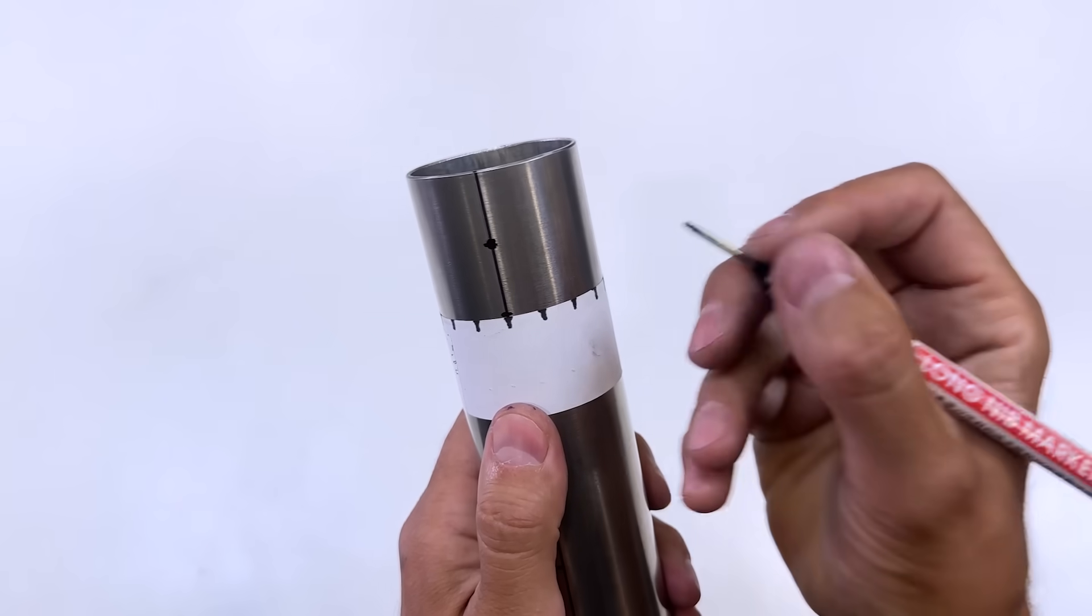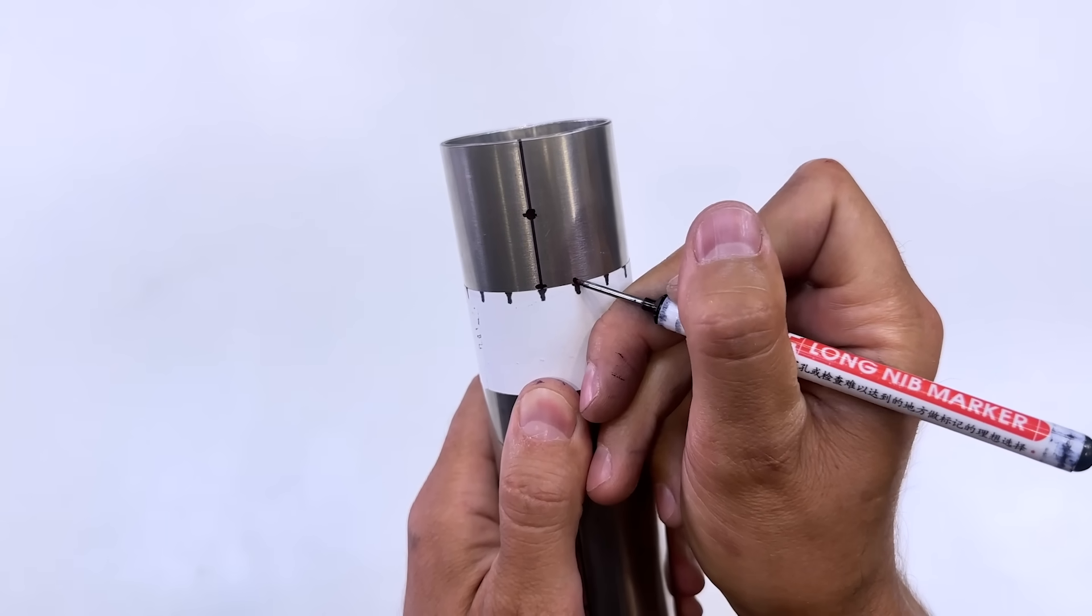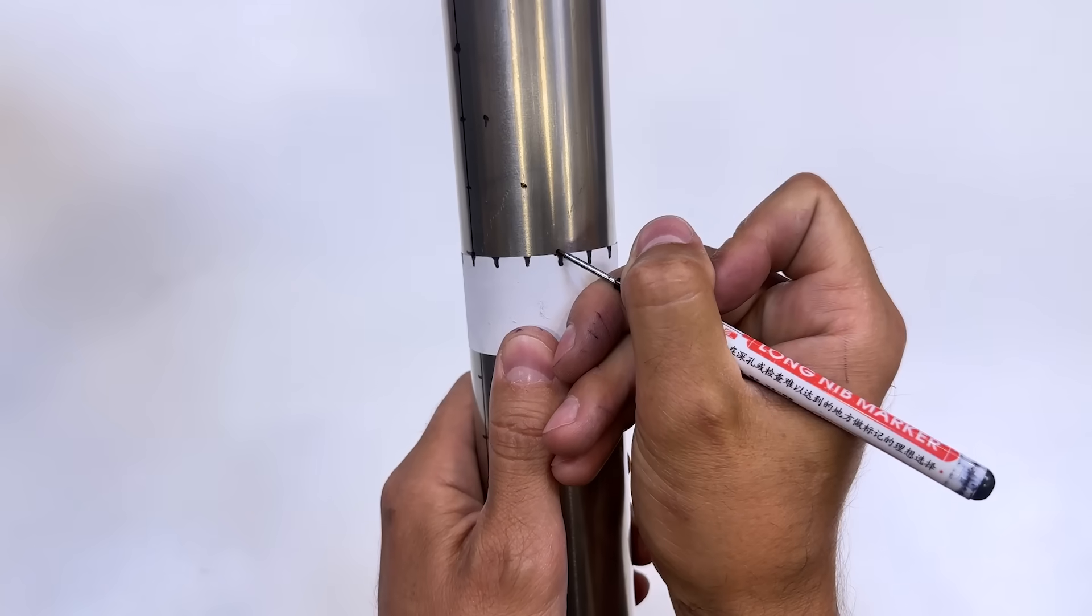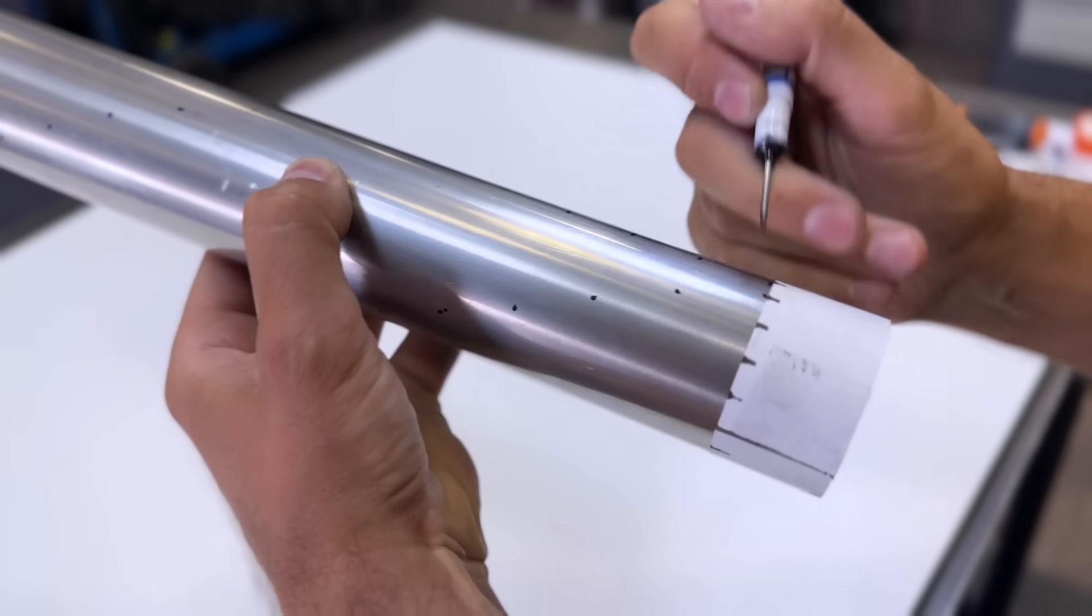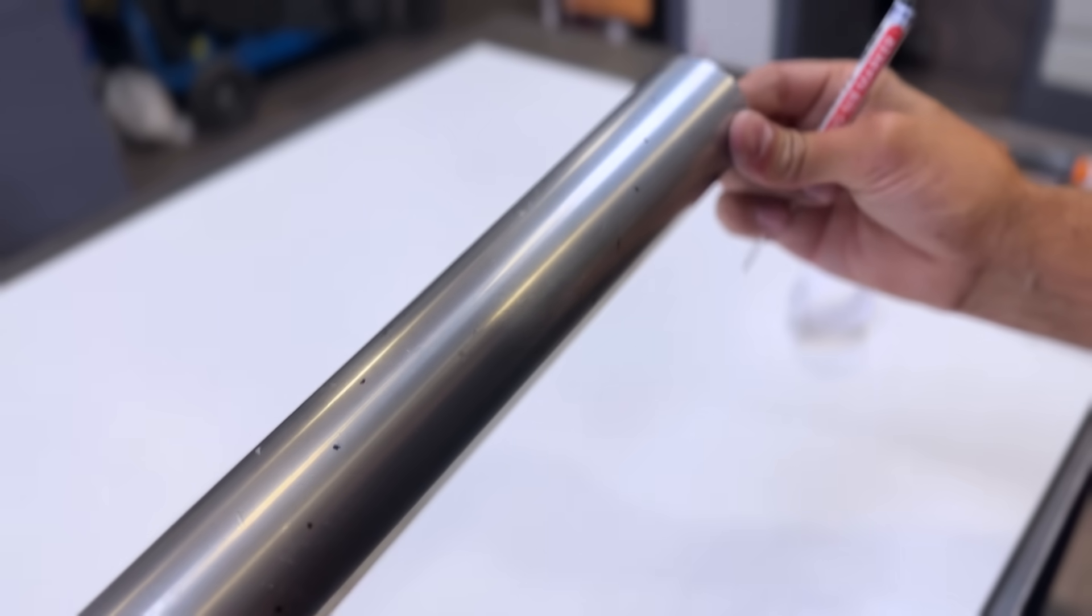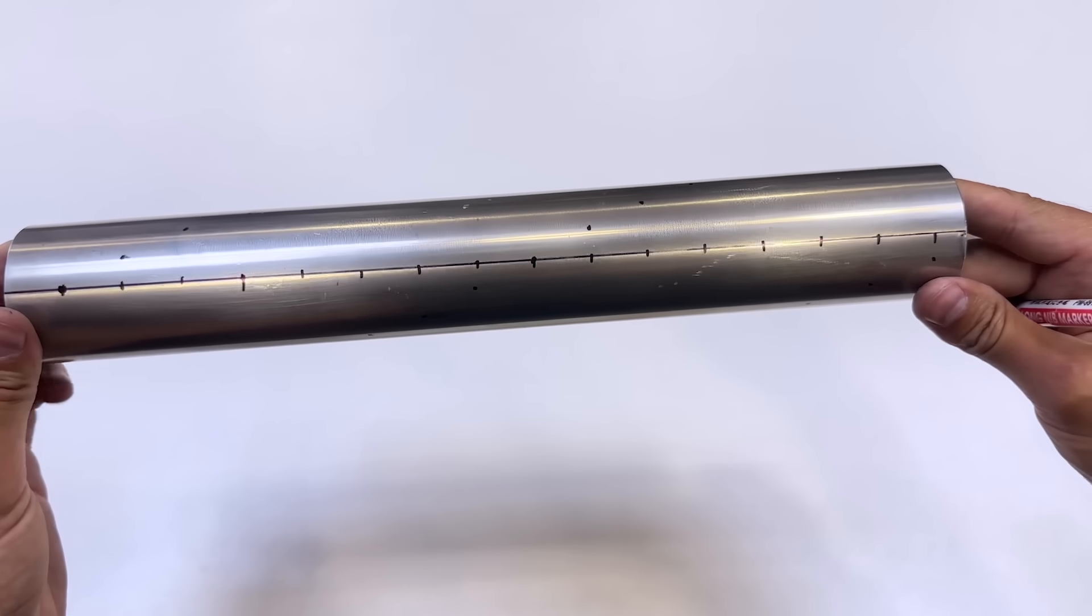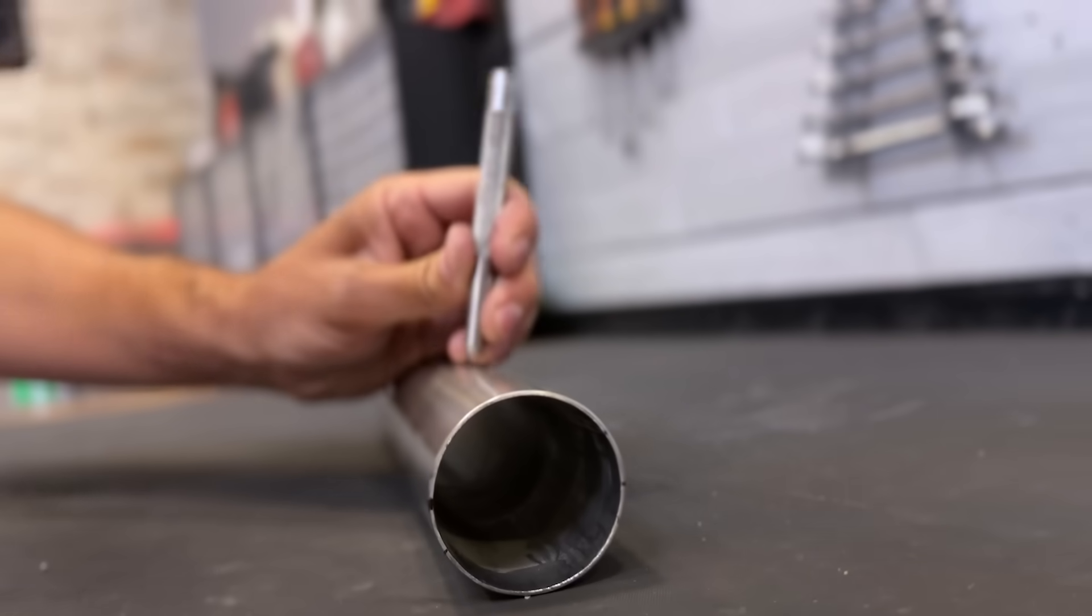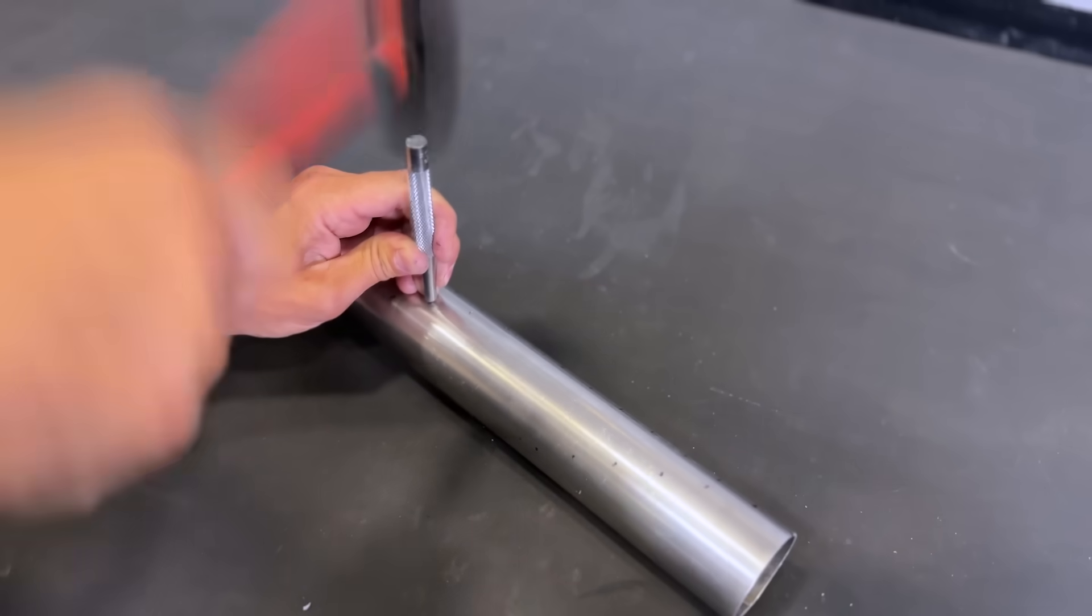Now we'll draw another spiral of holes, starting from the line we drew on the opposite side of the tube. We now have the two rows of spiral holes drawn along the tube. We mark each of the holes so we can drill them.